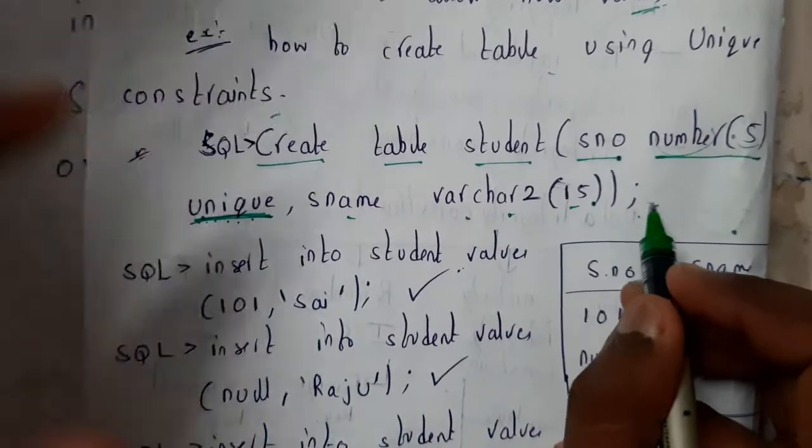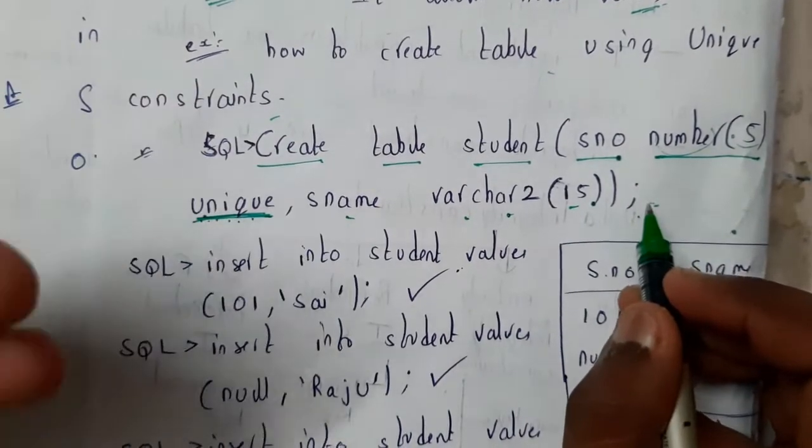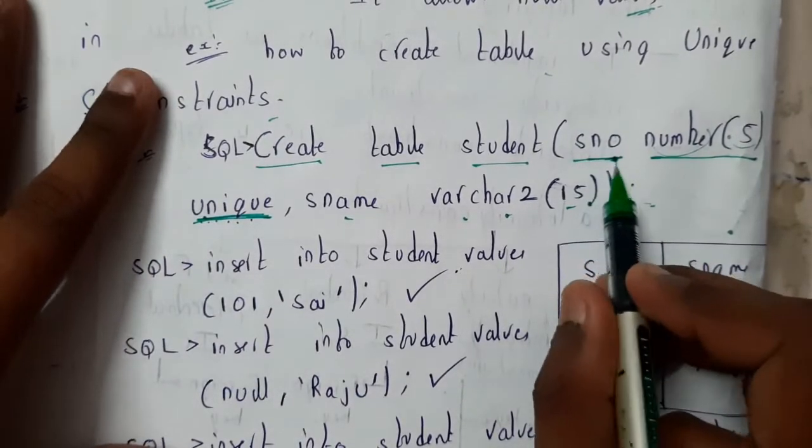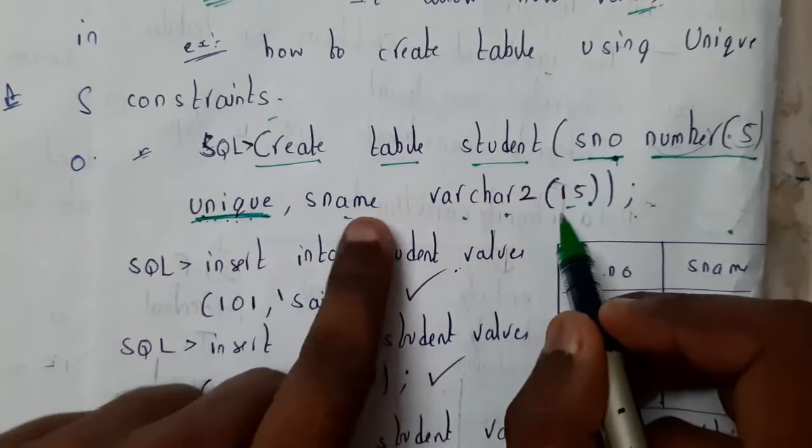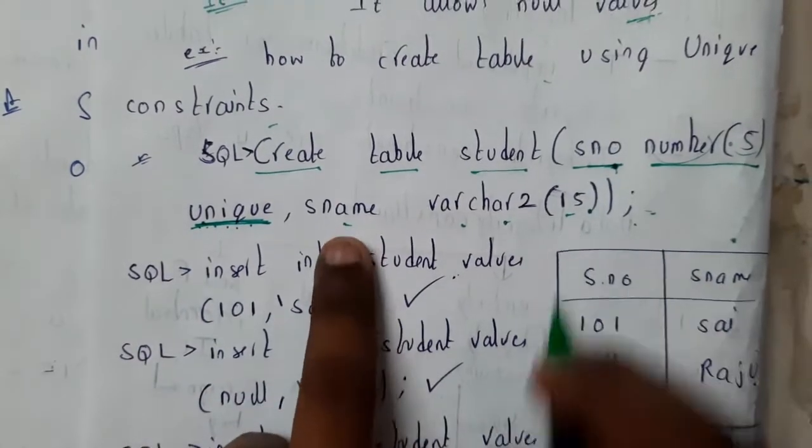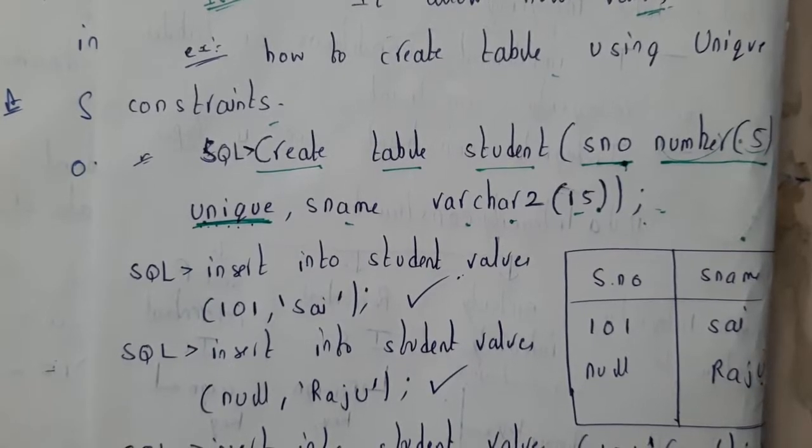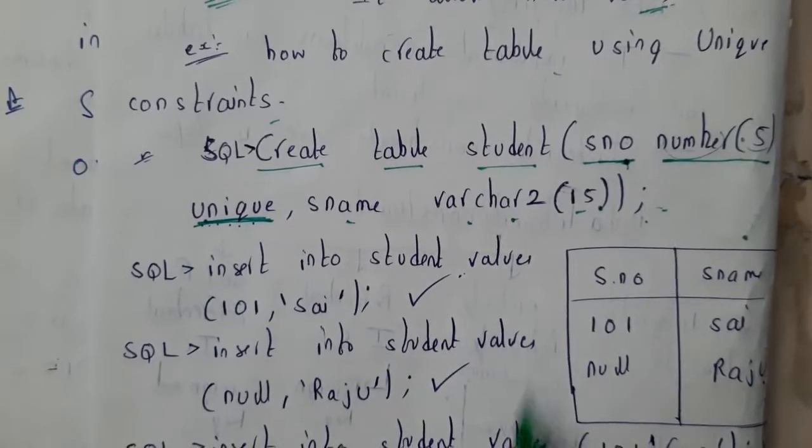Serial number might be unique, but is there a condition that name should be unique? Your name might be Raju and your friend's name may also be Raju. There could be many coincidences. That is the reason why you should never write unique for names.